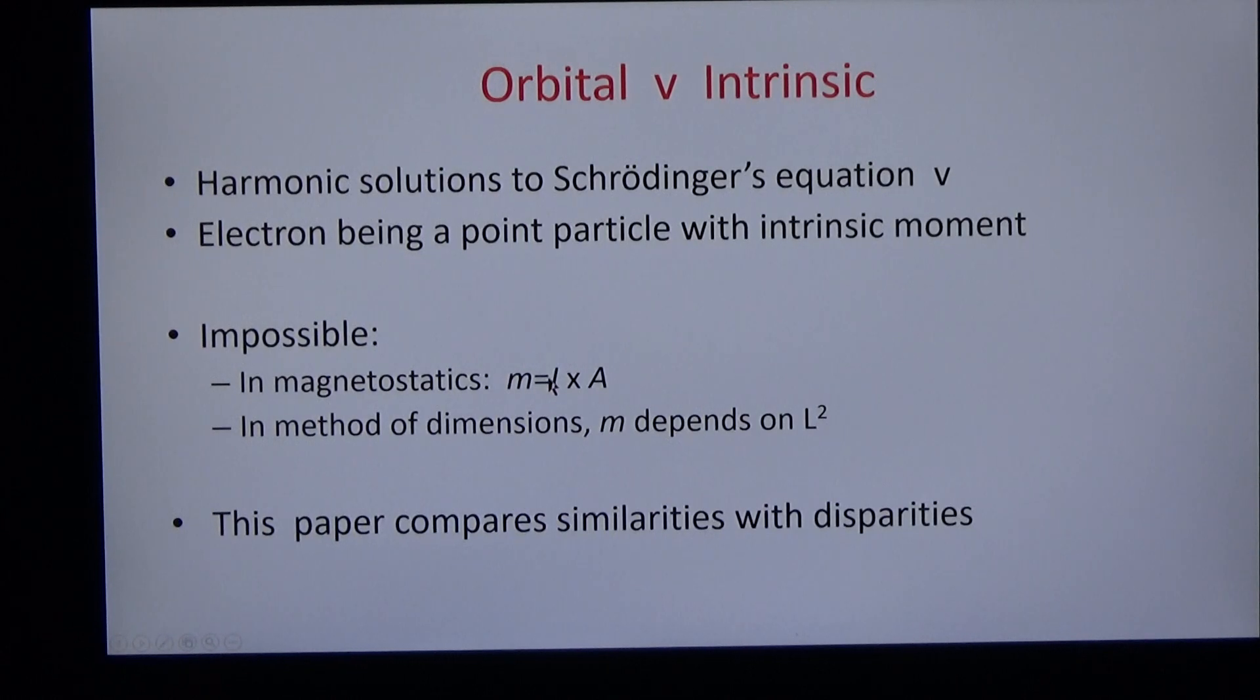Moment is a product of current times loop area, and in the method of dimensions m depends on L squared. This implies that the electron cannot be a point particle. The paper compares orbital moment with intrinsic moment.